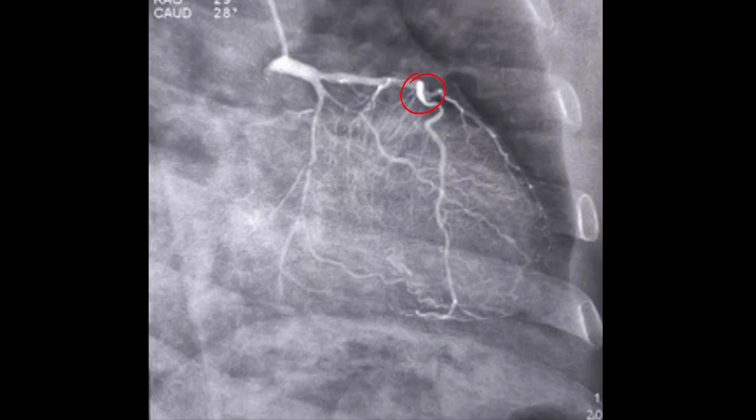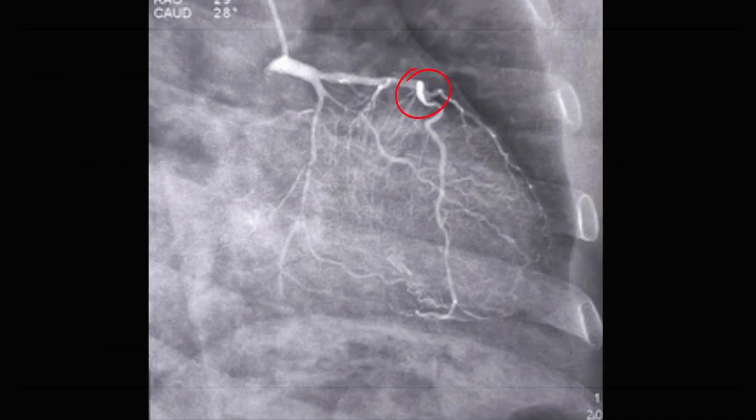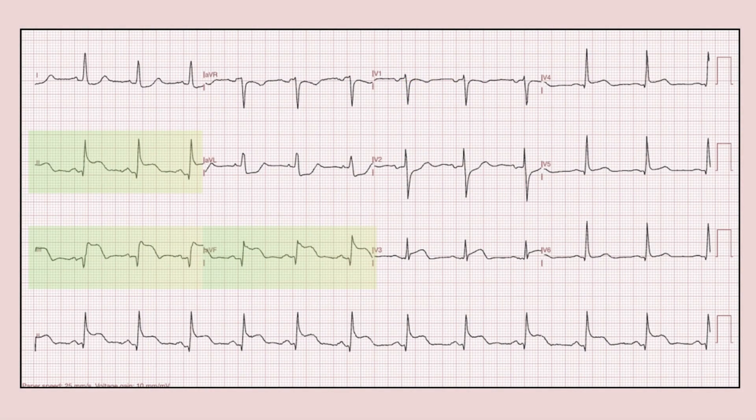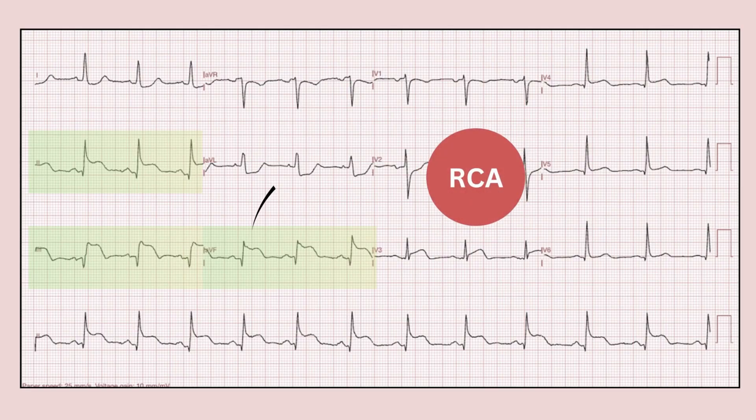Now a quick pause. Think about it. If leads 2, 3 and AVF are elevated, which artery is likely getting blocked? Yes, it's the right coronary artery.